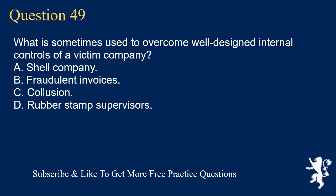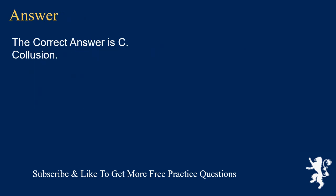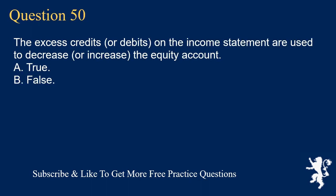Question 49: What is sometimes used to overcome well-designed internal controls of a victim company? A. Shell company. B. Fraudulent invoices. C. Collusion. D. Rubber stamp supervisors. The correct answer is C. Collusion.